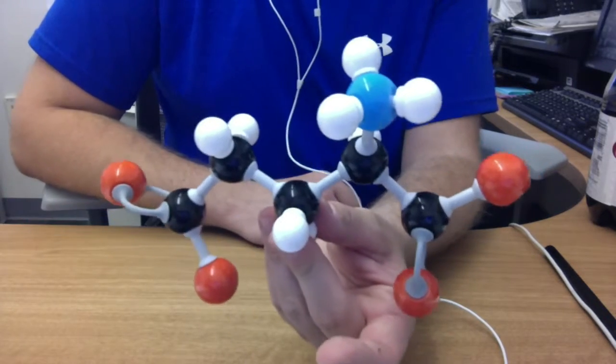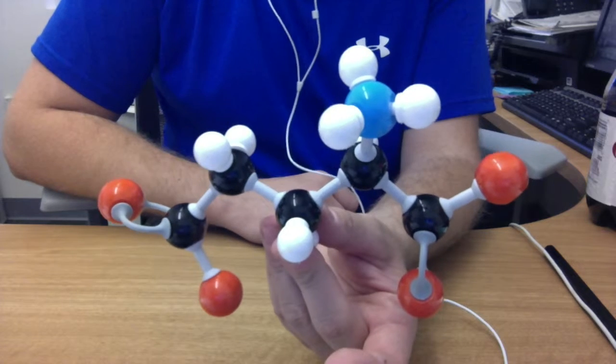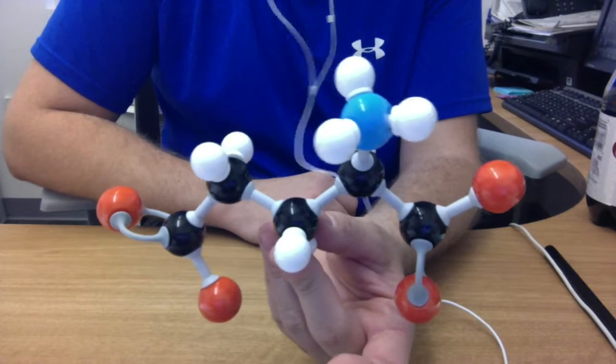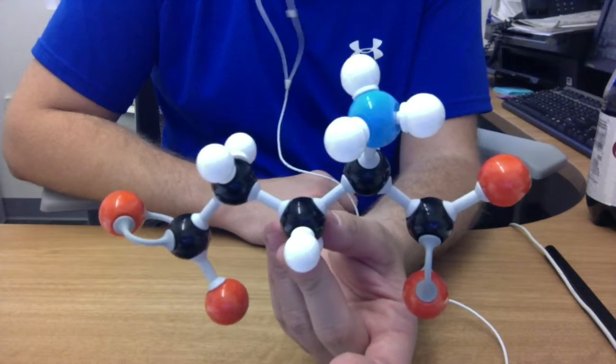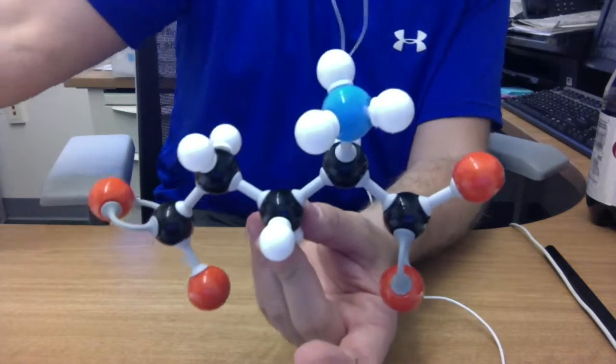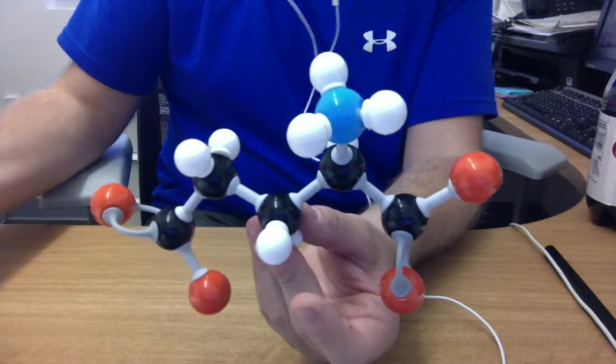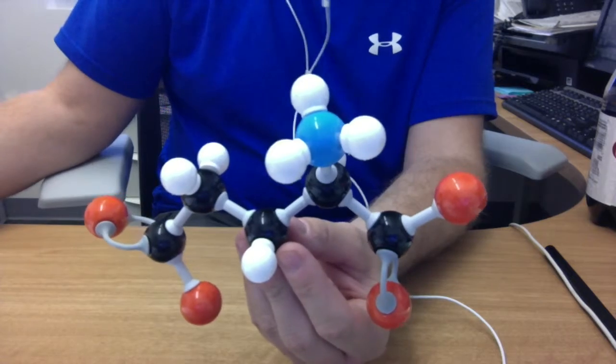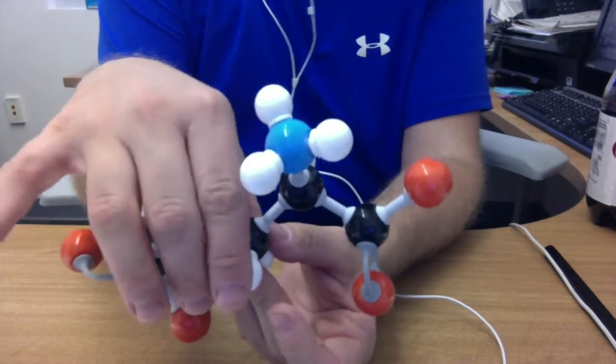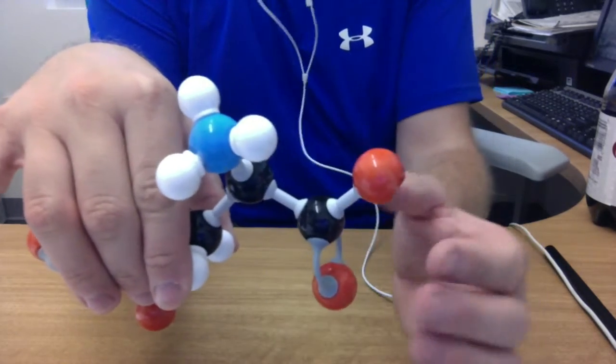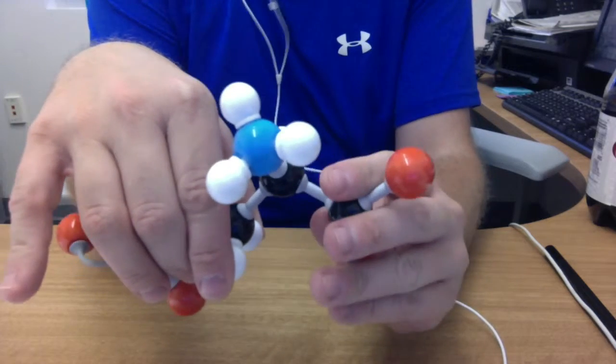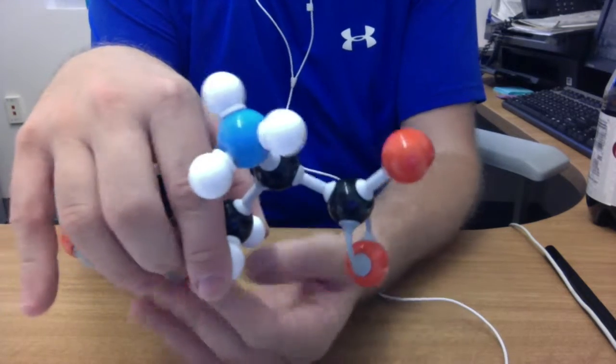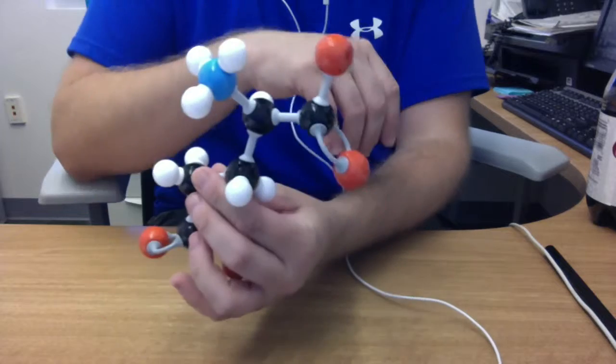And then what happens is, for glutamate to become GABA, what I do is I decarboxylate the glutamate. So what I do is I take the carboxyl group here. If you look at here, I take the carboxyl group, hold this back a little bit.